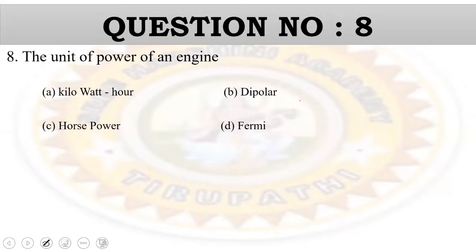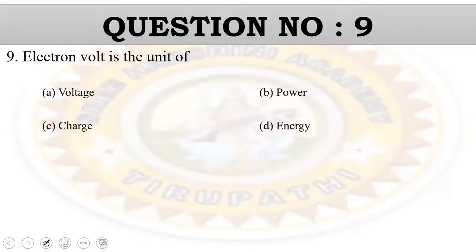Question number 8: Unit of power of an engine. The options are kilowatt hour, dipolar, horsepower, and fermi. Option 3 — horsepower — is the right answer. Question number 9: Electron volt is the unit of energy.